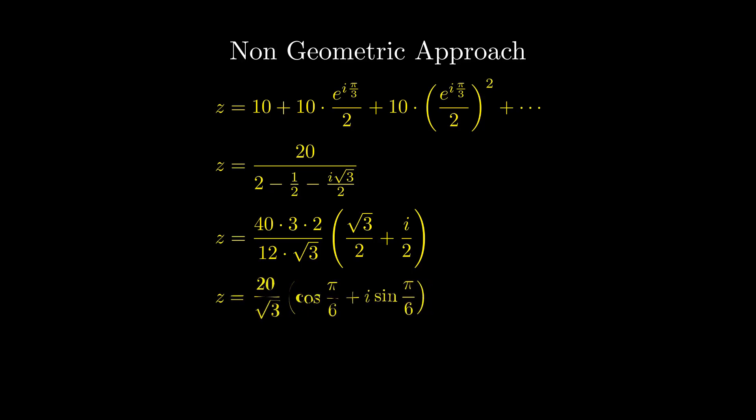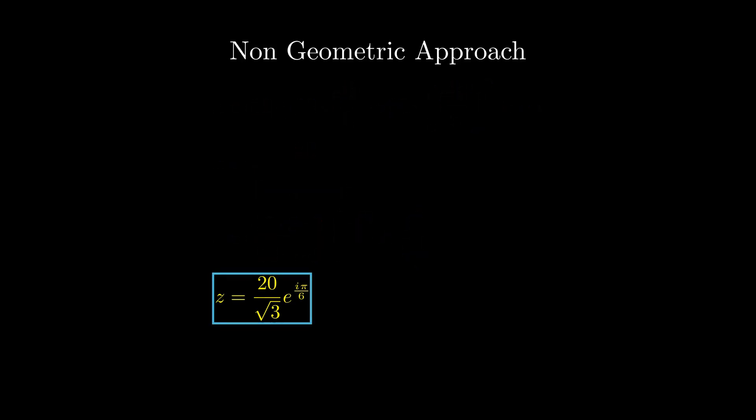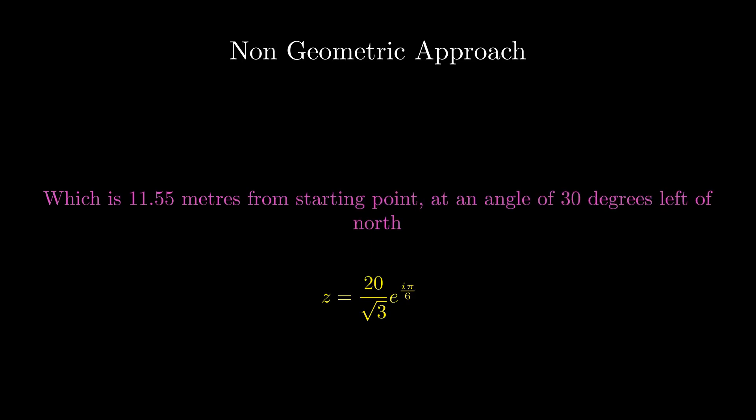And simplifying this, we get the value of Z. After all those tricky algebra, we get Z equals 20 / root 3 times e^(i pi/6). What does this mean? This essentially means that Nikhil is at a distance of 20 / root 3, or 11.55 meters, from the starting point at an angle of 30 degrees left of north. This agrees with our previous solution and concludes the problem.